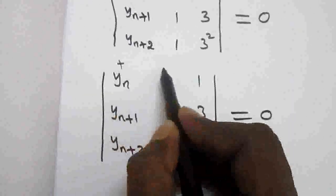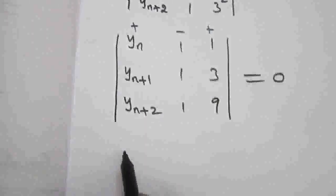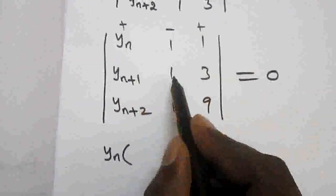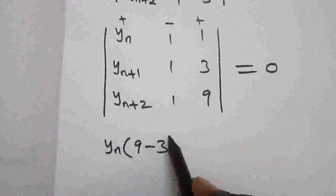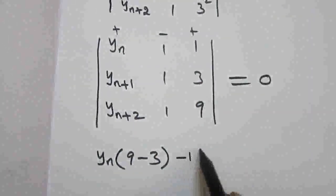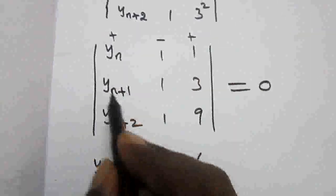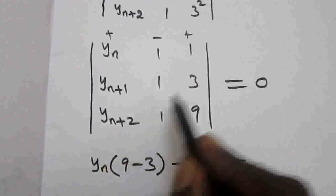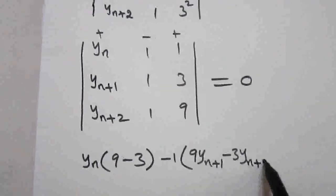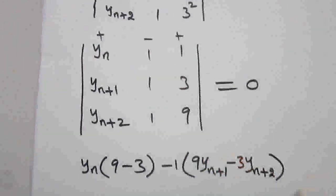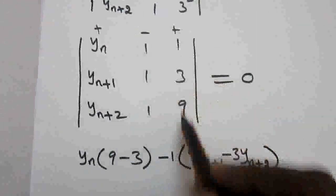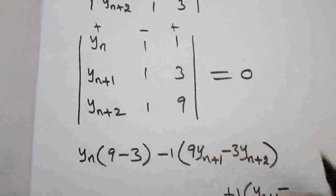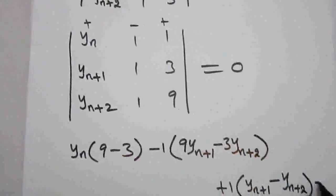Expanding with signs plus, minus, plus: yn into (1 into 9 minus 3), that is yn into 6; minus 1 into (9 y(n+1) minus 3 into y(n+2)); and plus 1 into (y(n+1) minus y(n+2)), equal to 0.